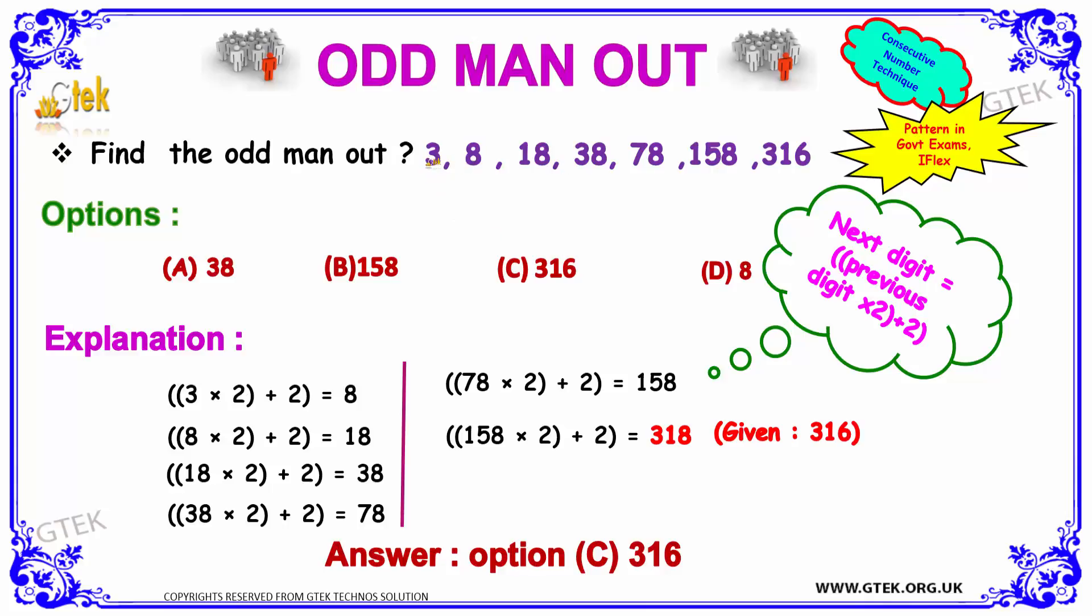You can see the difference between these two is 5. It's 10. The difference between these is 5, then 10, then 20, and this one is 40, and this one is 80. So there is something which is behind. Let's see how it can proceed.